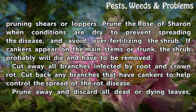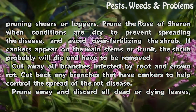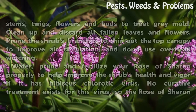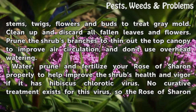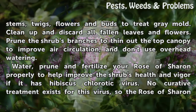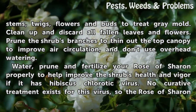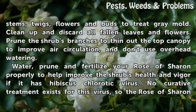Cut away all branches infected by root and crown rot. Cut back any branches that have cankers to help control the spread of the rot disease. Prune away and discard all dead or dying leaves, stems, twigs, flowers and buds to treat grey mold. Clean up and discard all fallen leaves and flowers. Prune the shrub's branches to thin out the top canopy to improve air circulation, and don't use overhead watering.